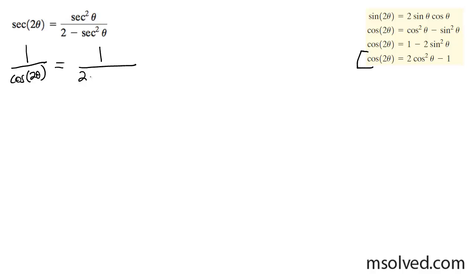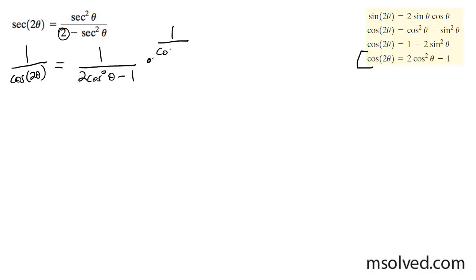So 2 cosine squared theta minus 1. I'm studying this top equation and I see that I've got a 2 here, so that's kind of an indicator of maybe what I should use. In this case, I'm going to divide through by 1 over cosine squared theta on both sides.